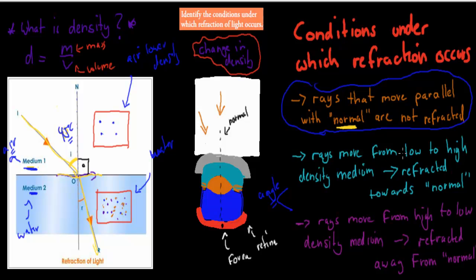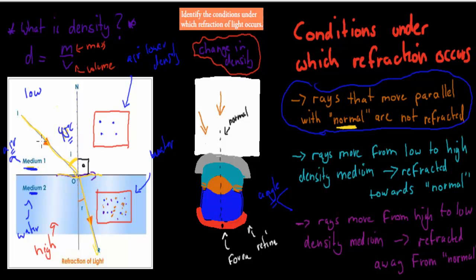Rays that move from low density to high density mediums refract towards the normal. In this case, we have air as the low density medium here, and water as the high density medium. The light moves at an angle and goes from low density to high density, which means when it refracts — when it bends — it bends towards the normal. Away from normal would have been bending further from that line, whereas towards means it's getting closer to the normal.